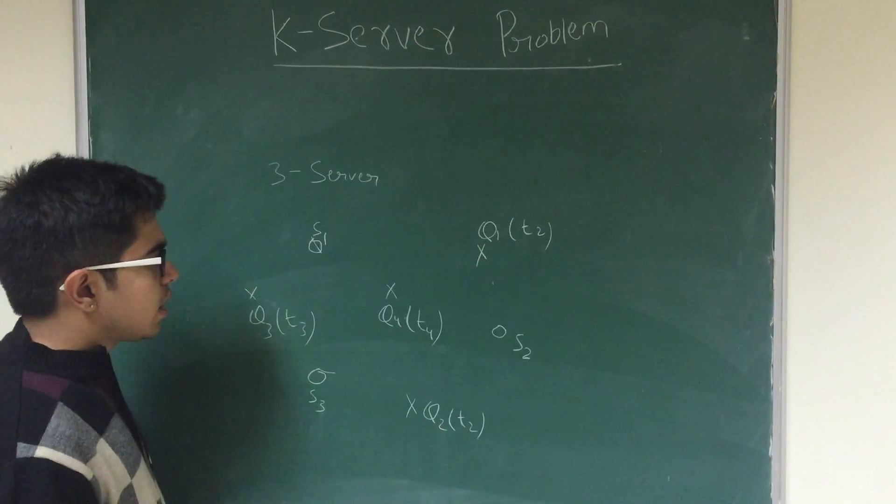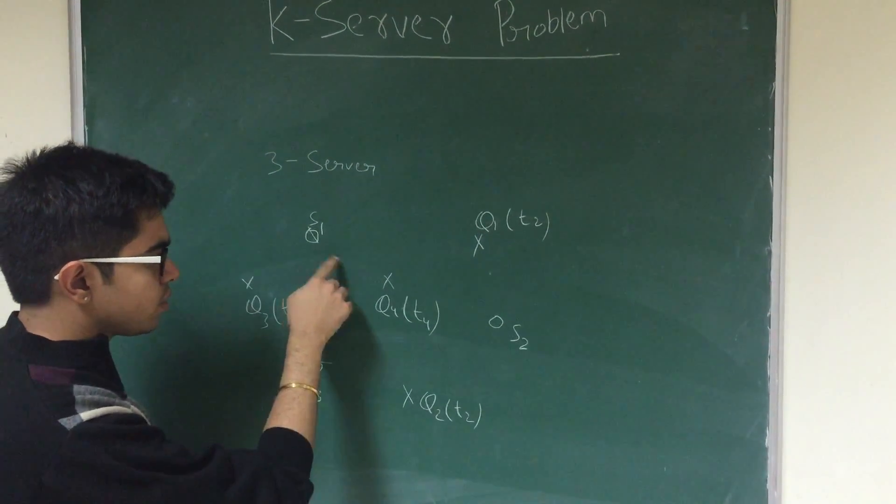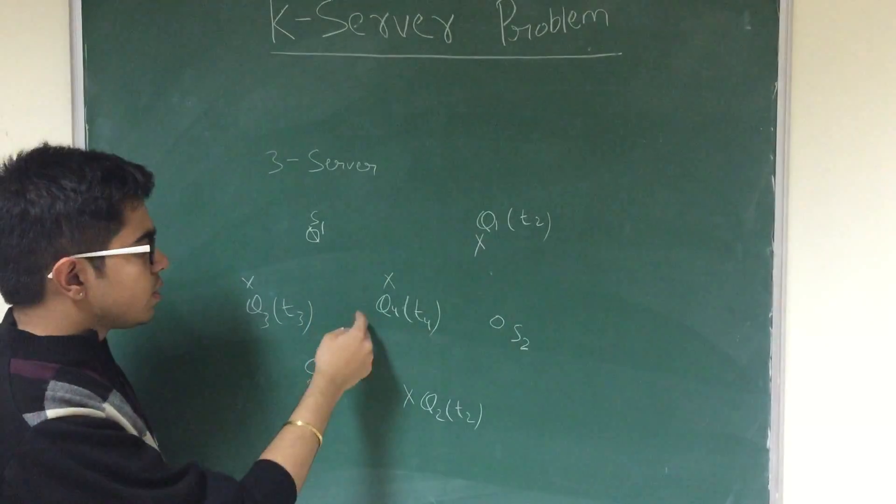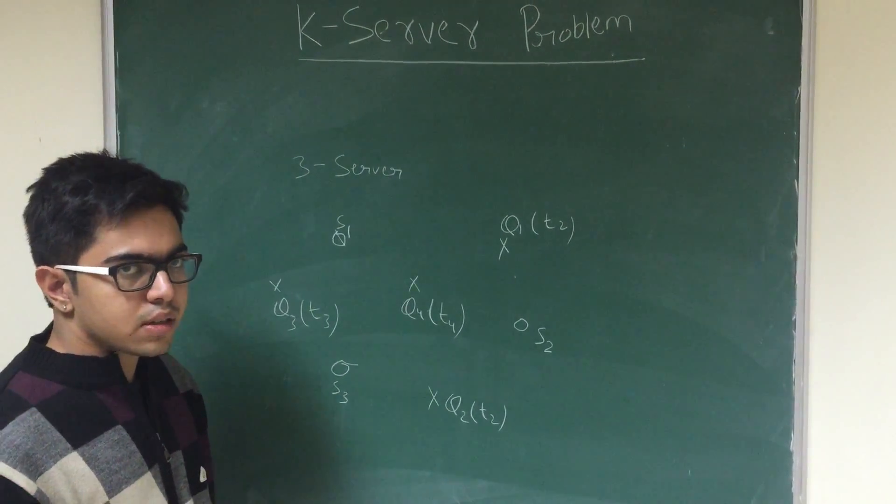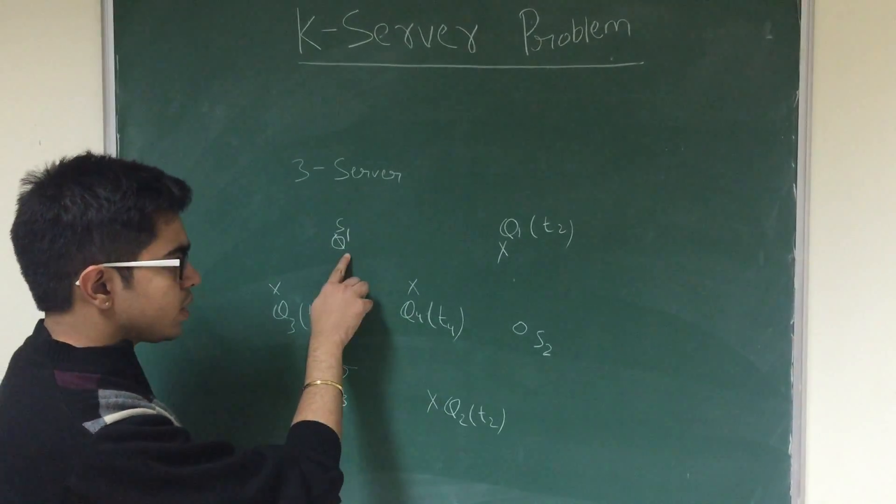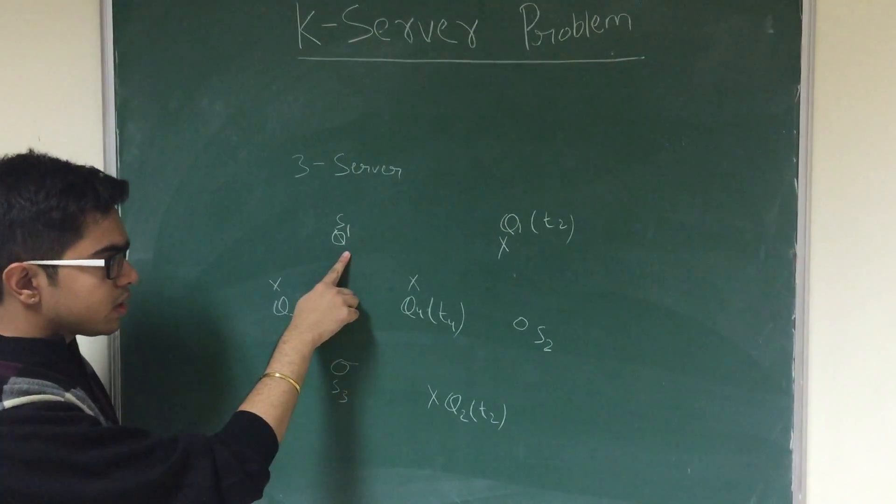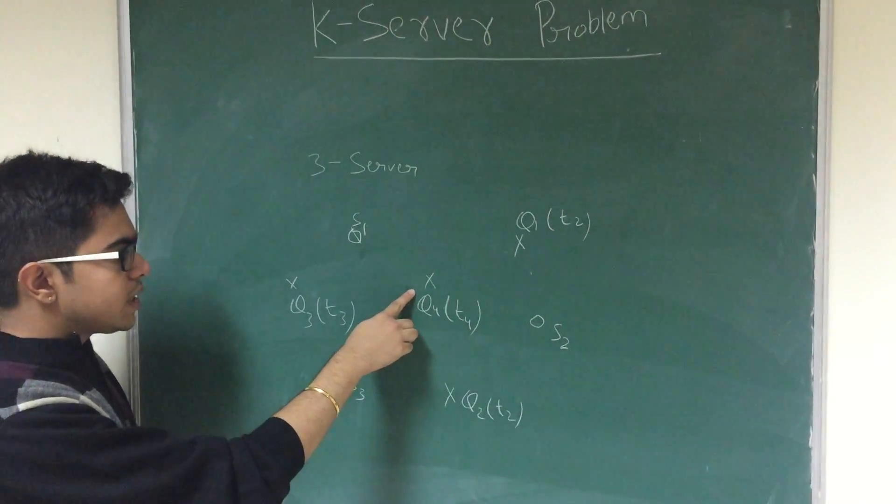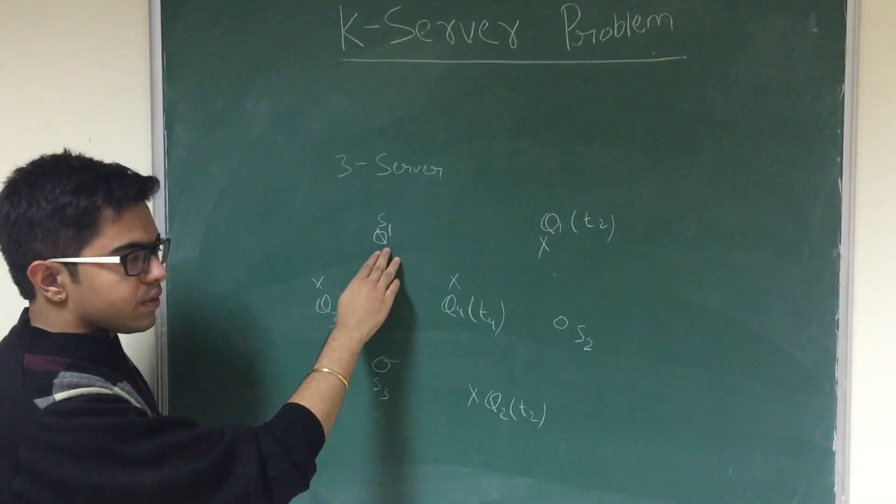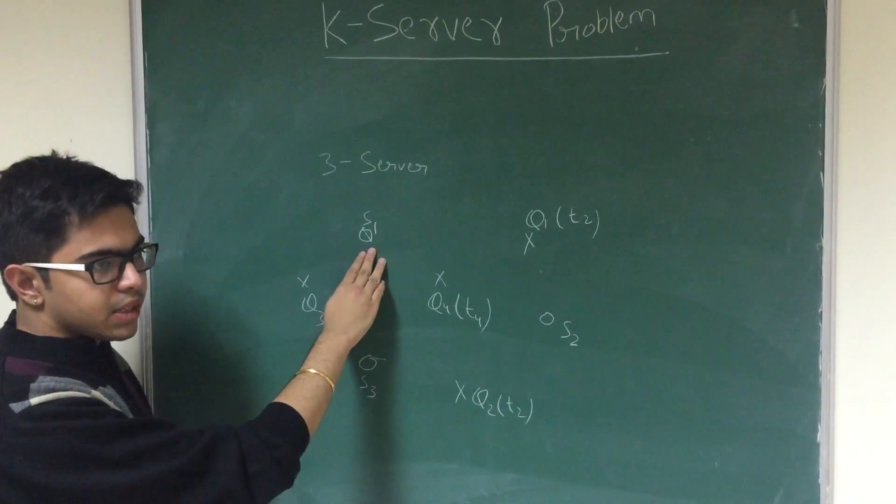Now, what my problem is, I have to assign each of these servers to a particular request. So as part of the optimization algorithm, the problem here is that I obviously want to assign the nearest server, the server which is closest to the incoming request. This way I'll be minimizing my efforts of the server, or let's say I'll be minimizing my cost.